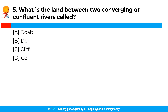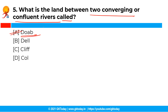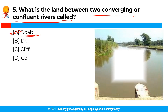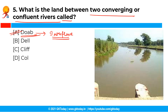The next question is: What is the land between two converging or confluent rivers called? The correct answer is option A, that is Doab. Doab, also known as interfluve, is a South Asian word for land lying between two converging or confluent rivers.